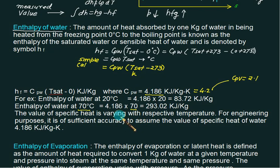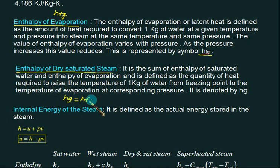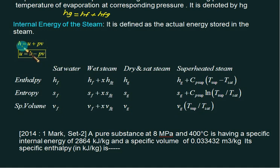For example, at 70°C: hf = 4.186 × 70 kJ/kg. The second term is enthalpy of evaporation, represented as hfg. The enthalpy of dry saturated steam is hg = hf + hfg, and therefore hfg = hg − hf. Properties are normally tabulated for hg and hf. The next term is internal energy: since enthalpy h = u + pv, internal energy is u = h − pv.